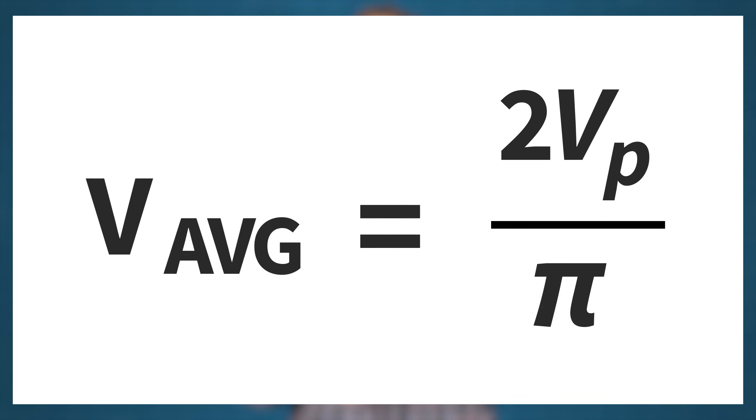As mentioned earlier, the average value of a full-wave rectified voltage is twice that of a half-wave. To calculate the average value, you can use this equation: V_average equals 2 times V_p, or the peak voltage, divided by pi.